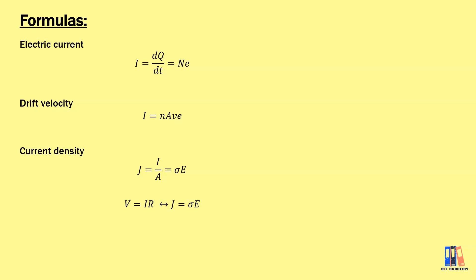The third thing is about current density. You don't need to learn the derivations — it is given as j = I/A, or j = σE, where σ is the conductivity. You also need to learn how to prove the equivalence between V = IR (Ohm's law) and j = σE. For the theory, I'll leave it for you to do revision.